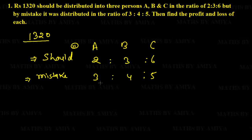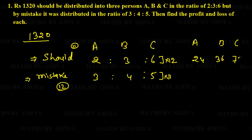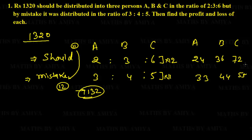We need to merge the totals since they represent the same sum. We multiply the should ratio by 12 and the mistake ratio by 11. So the should values become 2×12=24, 3×12=36, 6×12=72, and the mistake values become 3×11=33, 4×11=44, 5×11=55. The combined total is 11×12=132.